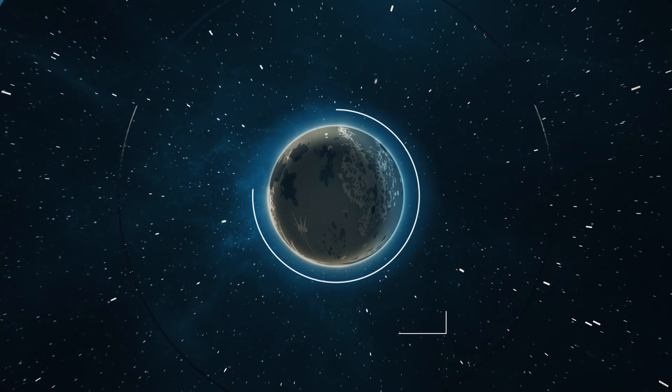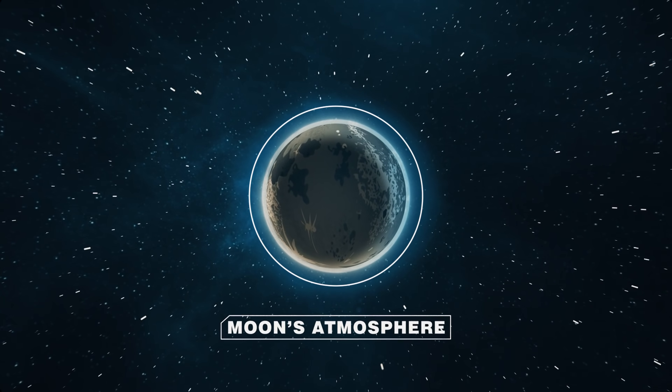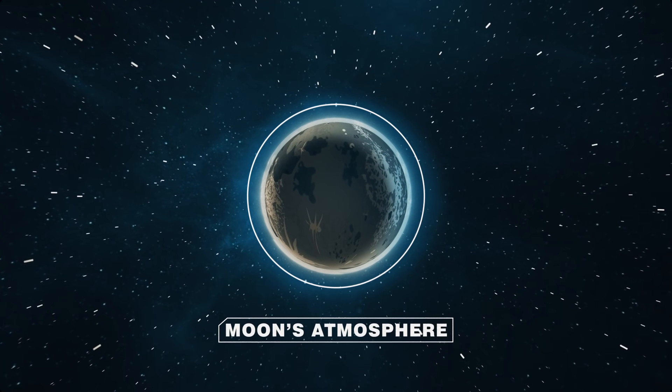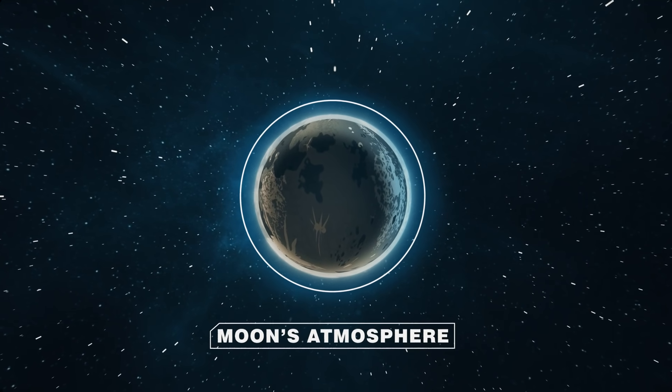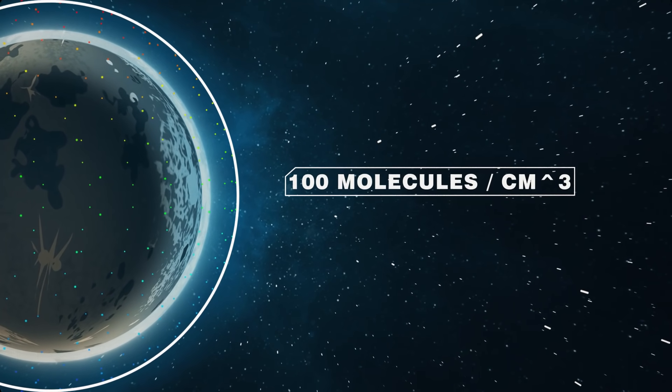First and foremost, the moon's atmosphere is unbearably thin. It's made of a paper-thin layer of gases which form a lunar exosphere. This exosphere contains just 100 molecules per cubic centimeter.